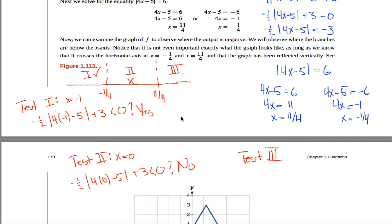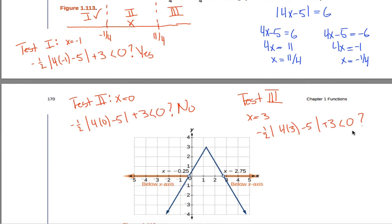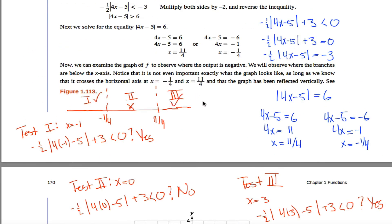What about region 3? Pick any number greater than eleven-fourths. Eleven-fourths is a little less than 3, so let's test 3. 4 times 3 is 12; 12 minus 5 is 7; absolute value of 7 is 7; negative one-half times 7 is negative 3.5. Negative 3.5 plus 3 is negative 0.5, which is still negative and less than 0 — a true statement. So yes, region 3 is in the solution set. My answer is all numbers in region 1 and all numbers in region 3.